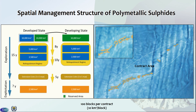Polymetallic sulfides is similar in temporal component, but the spatial structure differs. The contract area is split into blocks — 100 blocks per contract — which can be contiguous or non-contiguous, and each block is 10 square kilometers. Exploration takes place over 15 years, and a developed state gives half of their contract area to a developing state. Part of that is relinquished, and eventually 2,500 square kilometers can be used for mining. They're not quite sure about the timeline of exploitation yet.